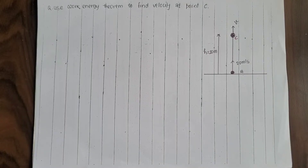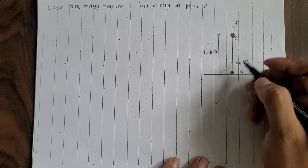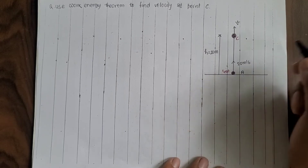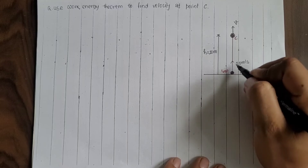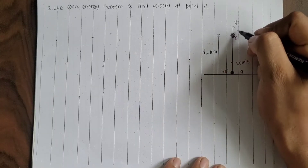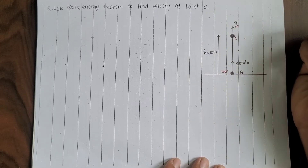Use the Work-Energy Theorem to find velocity at point C. Hello students! This question is from Class 11 physics mechanics. A body of mass m is thrown upward from the ground at 20 meters per second. We need to find the velocity at point C using the Work-Energy Theorem.